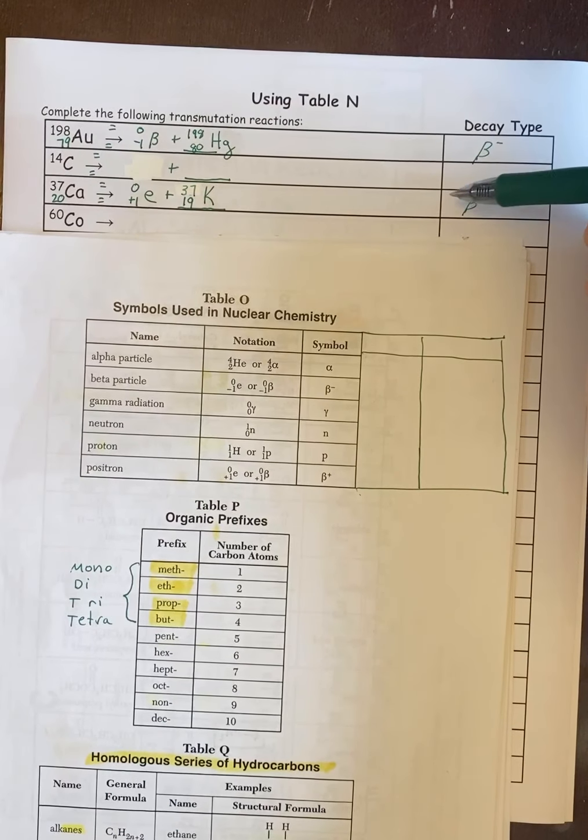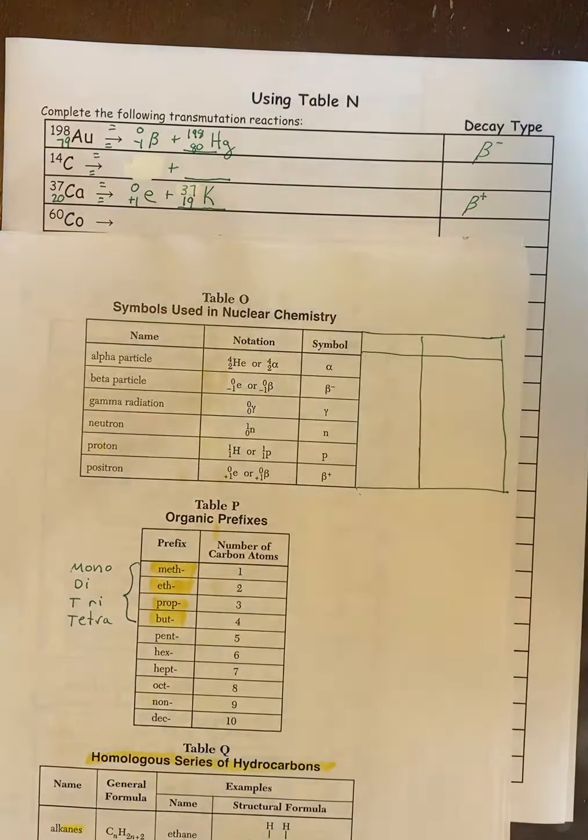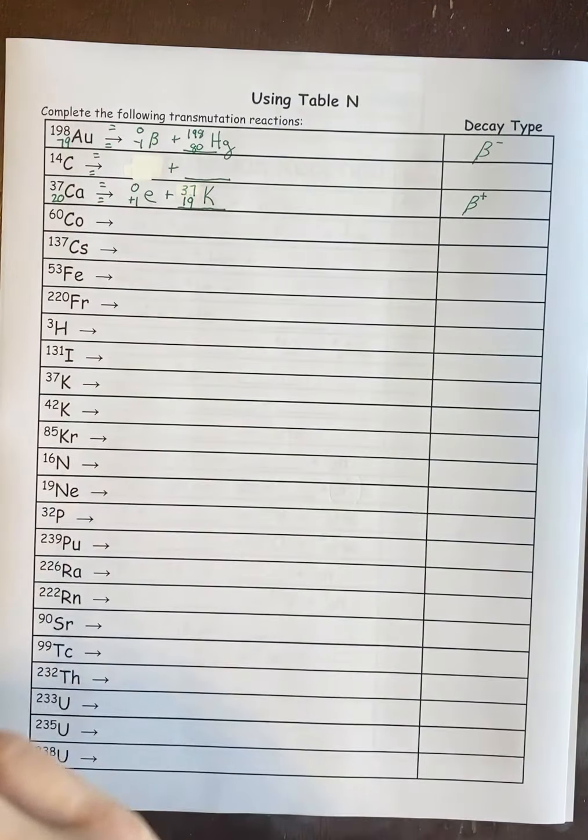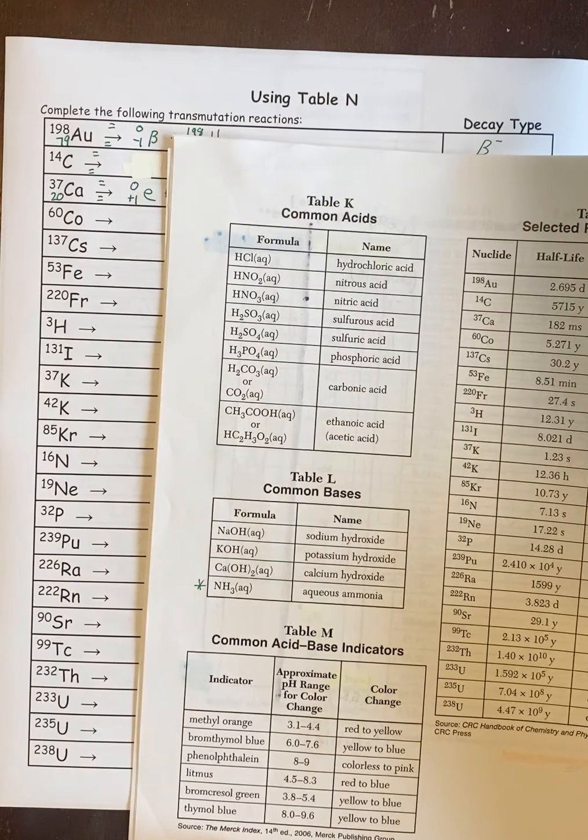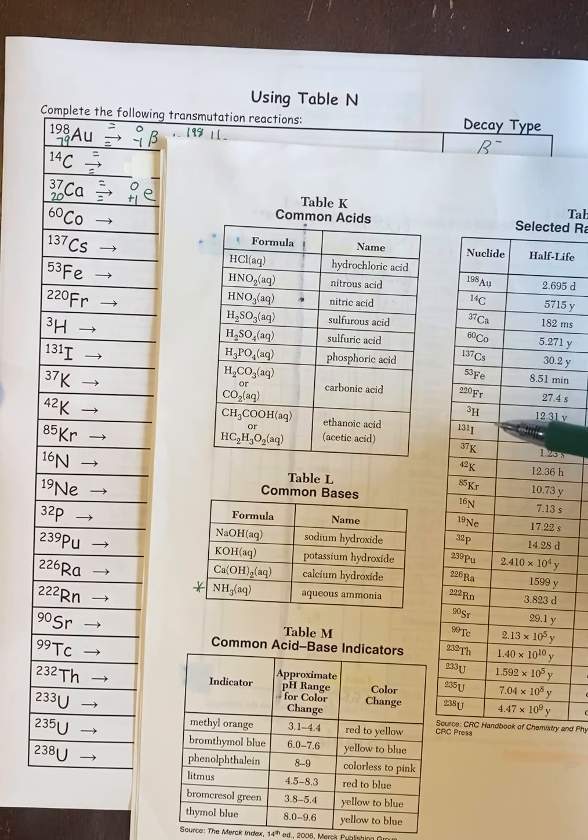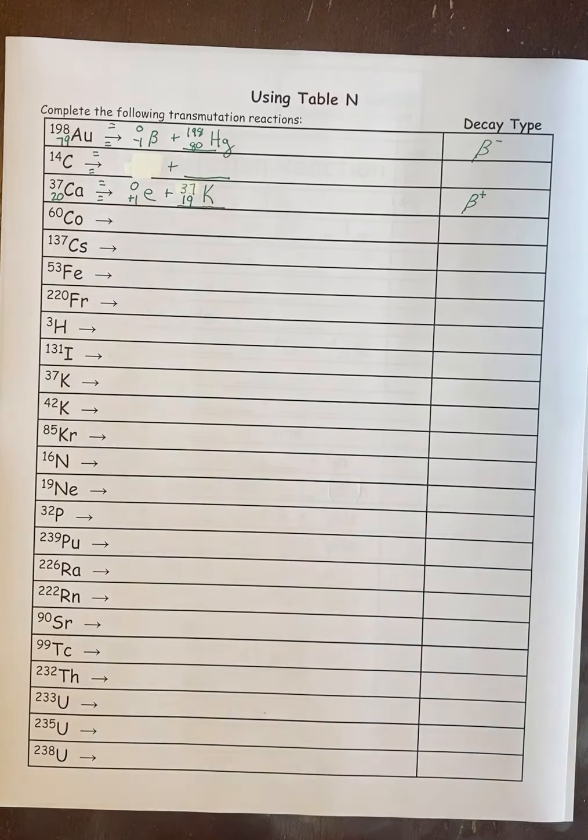And then this is going to be what you do on number 8 on the previous page. Number 8 on the previous page is just going to be one of these. And if you notice on this, if you look at table N, the order here is going to be the order here. And it's just going to follow it down all the way. So you're doing the decay modes for every single radio isotope on table N for the back. And so that's everything you need to know to do this worksheet.